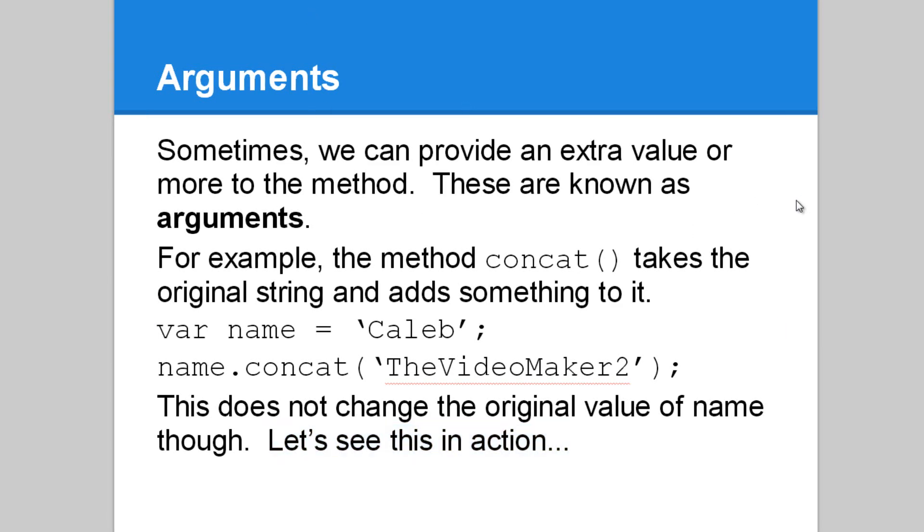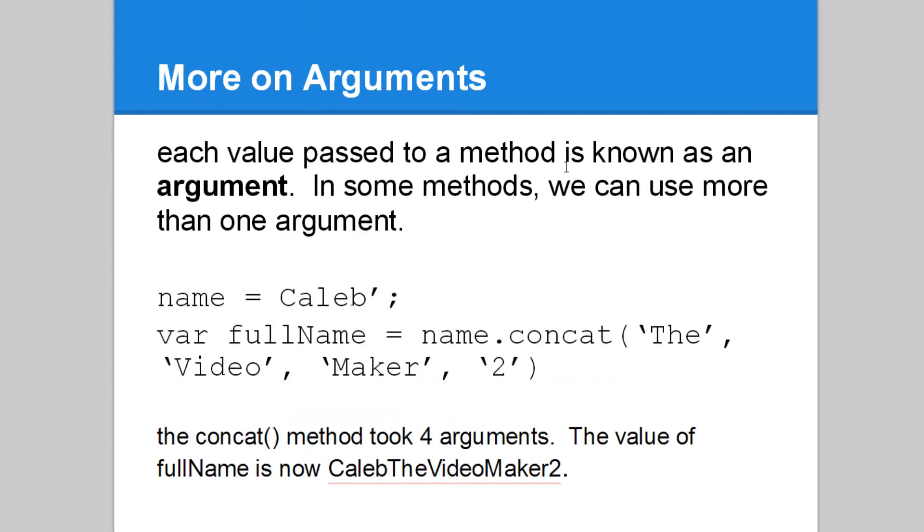So now let's continue on with our PowerPoint. Each value passed to a method is known as an argument. In some methods, we can use more than one argument. Concat is one of those that can take multiple arguments. As you can see here, we have four. And we can use more than that if we wished. But now, the value of full name is going to be Caleb the video maker, too. We get the same result, just with more arguments.